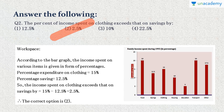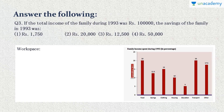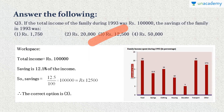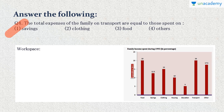Question 3: If the total income of the family during 1993 was 1 lakh, what were the savings? If 100% equals 1 lakh, then 12.5% equals 12,500. Option 3 is correct.